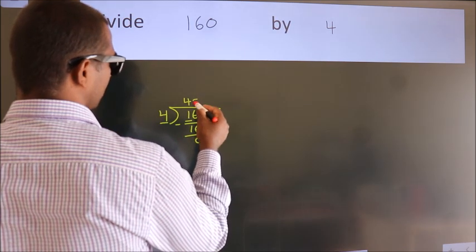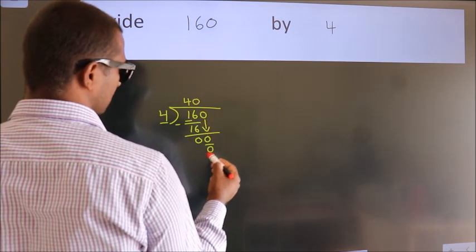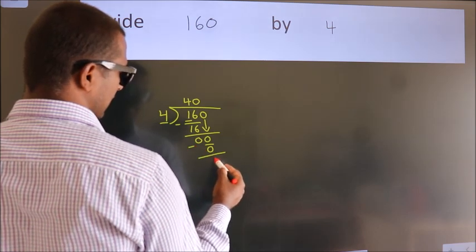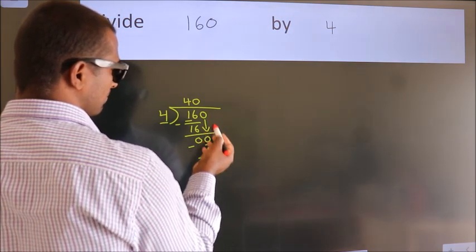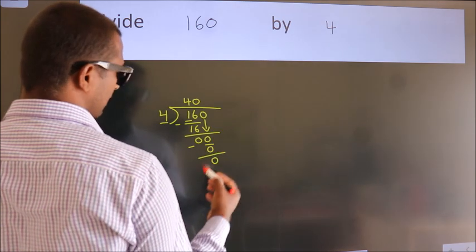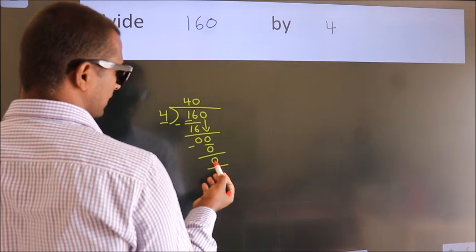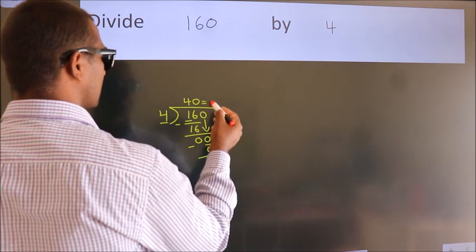4 times 0 is 0. Now we subtract and get 0. After this, no more numbers to bring down, and we got remainder 0. So this is our quotient.